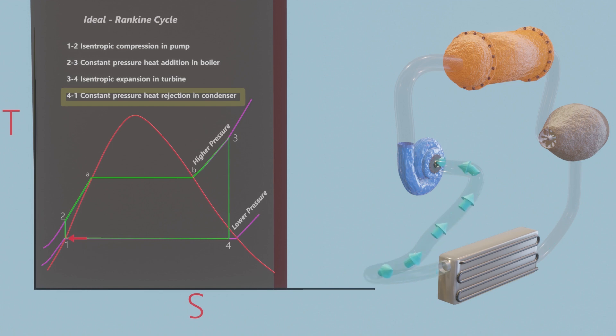Remembering that the area under the process curve on a T-S diagram represents the heat transfer for internally reversible processes, we see that the area under process curve 2 to 3 represents the heat transfer to the water in the boiler, and the area under the process curve 4 to 1 represents the heat rejected in the condenser. The difference between these two is the net work produced during the cycle.